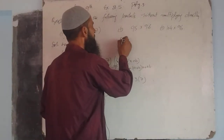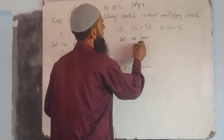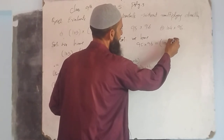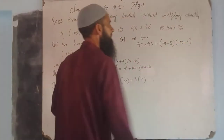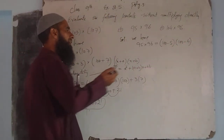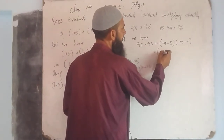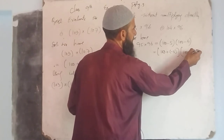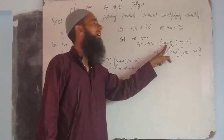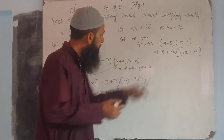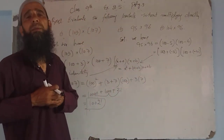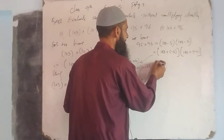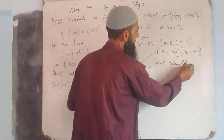The second part: hamare paas 95 into 96. This can be written as (100 − 5) into (100 − 4), which is in the form (100 + (−5)) into (100 + (−4)). Using the same identity (x + a)(x + b) = x² + (a + b)x + ab, ye identity hum isme bhi use karenge.